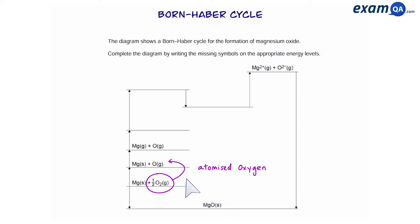This arrow shows the atomisation of Oxygen. Here we have the atomisation of Magnesium and here we can see that they've been turned into positive and negative ions. Which means the first and second ionisation of Magnesium and the first and second electron affinity of Oxygen are yet to be displayed.